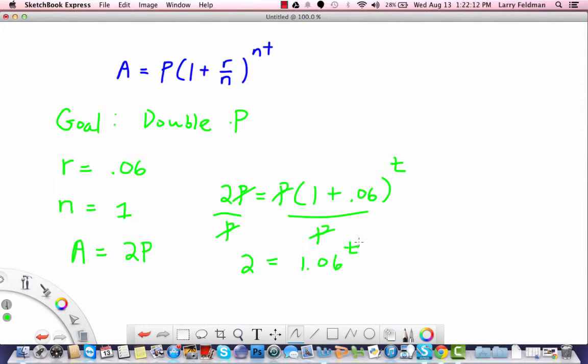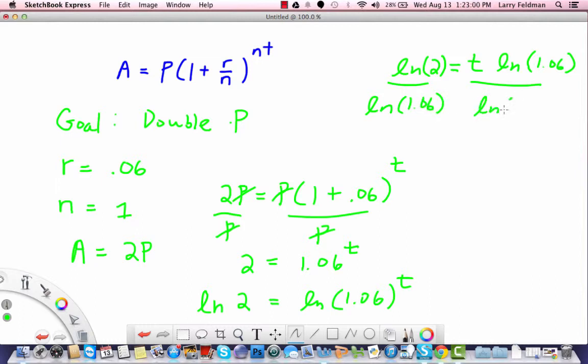Now we need to use logarithms to solve this problem so for example we could take the natural log of both sides. Natural log of 2 equals natural log of 1.06 raised to the T. Let's come up here. Natural log of 2 equals, and remember when dealing with logarithms if there's an exponent you can bring it to the front, we have T times the natural log of 1.06. Now all we need to do is divide both sides by natural log of 1.06, that cancels with that and we get T equals natural log of 2 over natural log of 1.06.